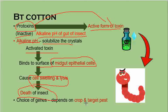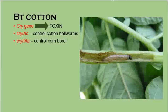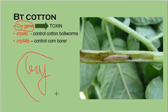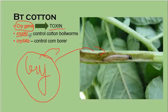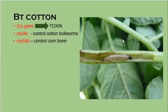When choosing the gene for cloning to make a plant insect-resistant, it depends on the crop and the target pest. The gene used is called the cry gene — you can remember it as 'cry' because the insect is going to cry and die. For example, cry1Ac controls cotton bollworms, and cry2Ab controls corn borers.